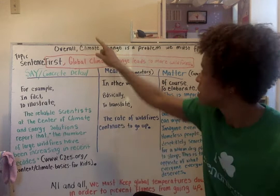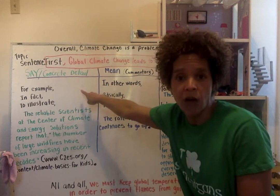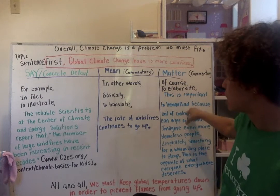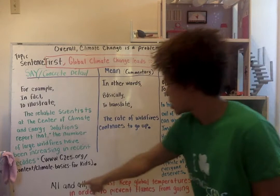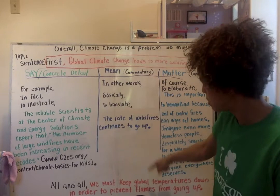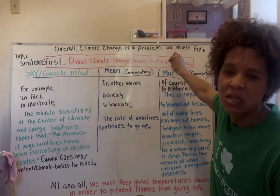So I make a chart: say, mean, matter. In other words, my concrete detail is the say. My mean is one line of commentary. And then my matter is the other lines of commentary. My topic sentence is up here and my concluding sentence is down there. I made the topic sentence and the concluding sentence the same color because these two are related — my concluding sentence has to refer back to the topic sentence, saying the same thing, restating it, but using different words.